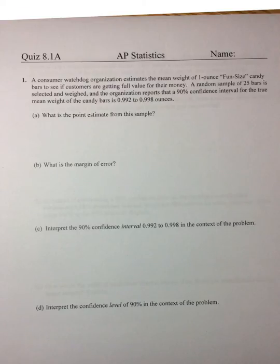Okay, on this one, if you read the question, we are looking at one ounce fun-size candy bars. They take a sample of 25 bars and they get the mean weight for those 25 bars. What is the point estimate? Well, the point estimate is going to be the sample mean. Here's our interval, so the mean would have to be right in the middle of that. So I add them up and divide it by 2, and you get 0.995.